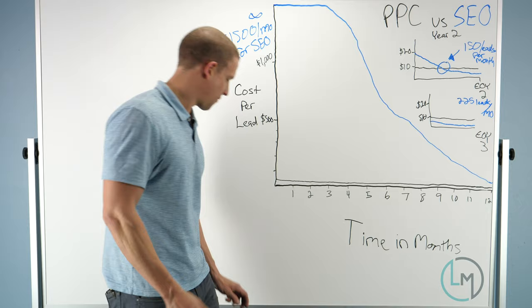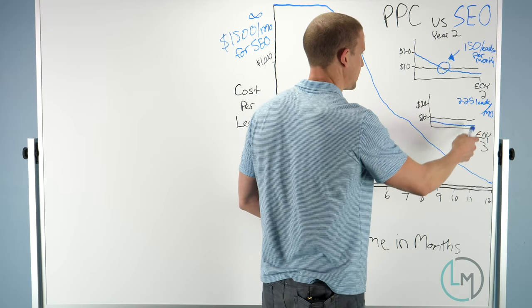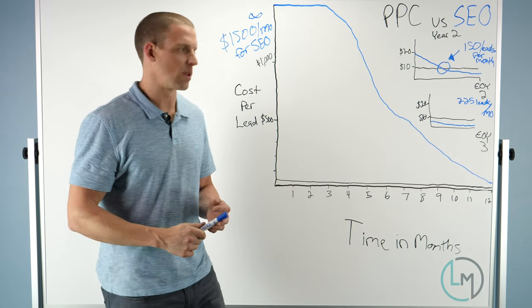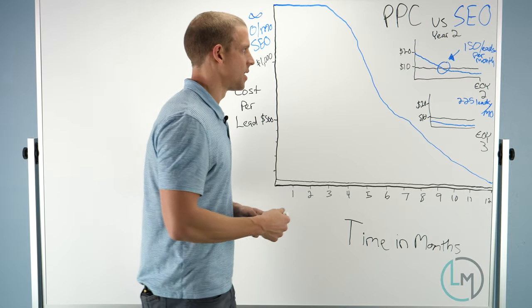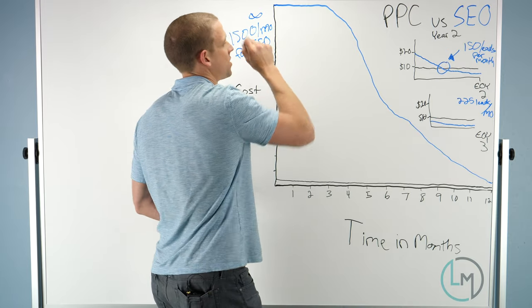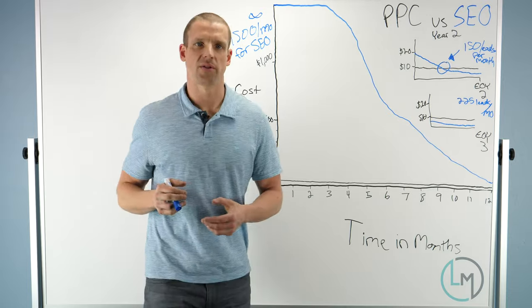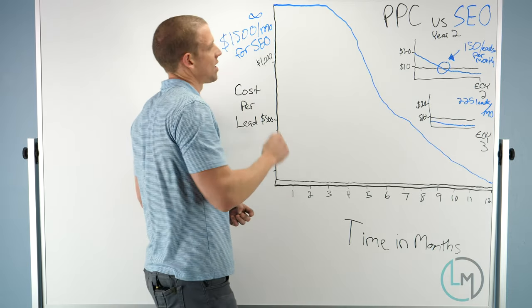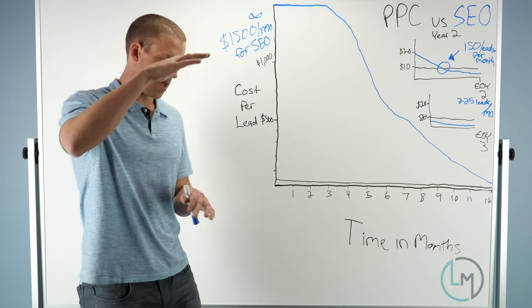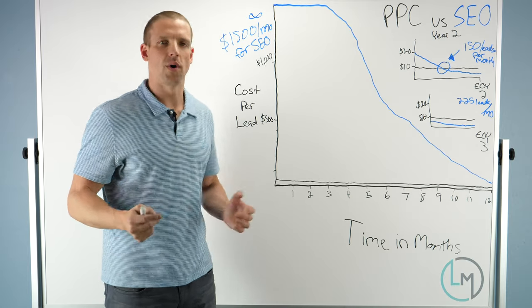If we combine—if you're doing 225 leads per month from this and let's say 150 from Google Ads, and you're paying $10 a lead for Google Ads, that's $1,500 a month. But those 225 leads, you're still paying $1,500 a month for, which would be about $6 or $7 a lead. So you'd be paying $3,000 a month but you'd be getting 375 leads a month. Overall, it would bring down your average cost per lead.